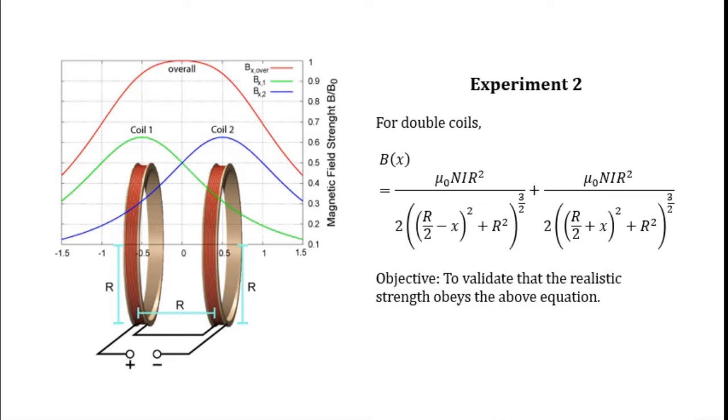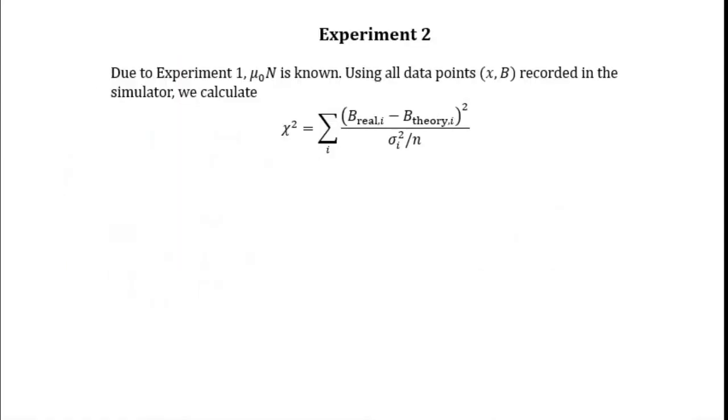The objective of the second experiment is to validate whether the realistic strength obeys the theoretical value of B, which is given by B(x). Of course, from experiment number one, the value of μ₀N is already calculated.